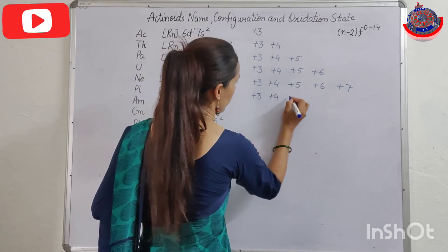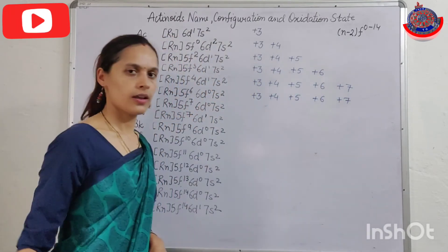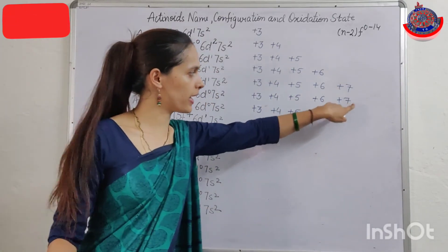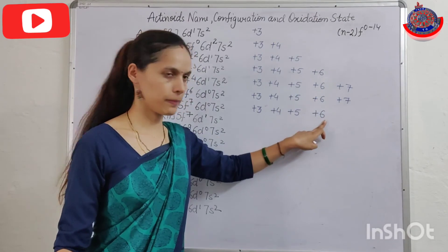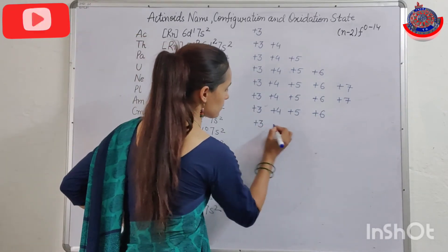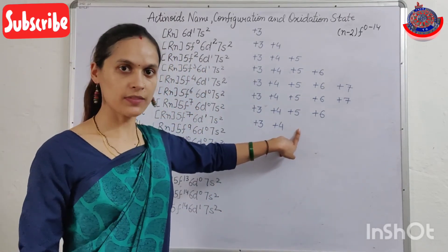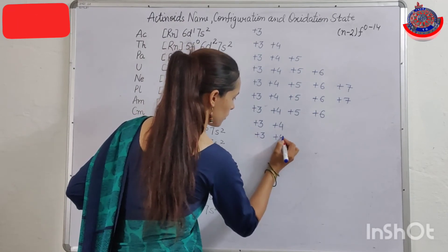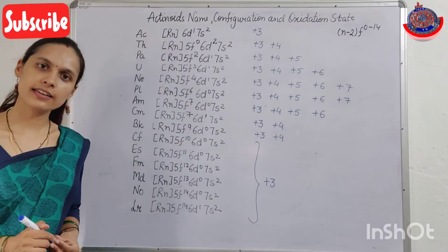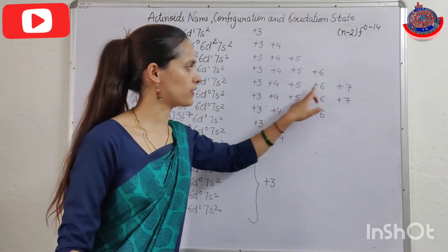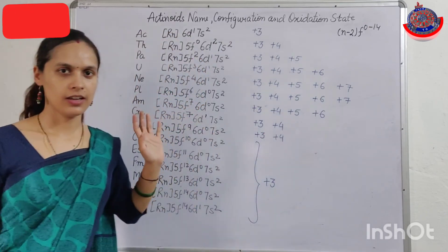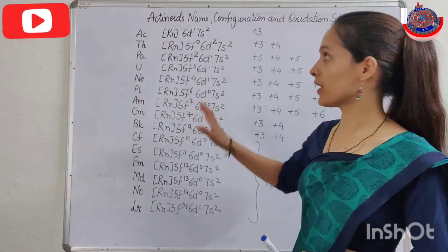Then repeat: +3 +4 +5 +6 +7, then +3 +4 +5 +6, then +3 +4 +5, then skip +5 and write +3 +4, skip again, +3 +4, then remaining +3 +4 +5 — skip +5, +3 +4, skip +5, +3 +4, +3. So: 3, 3-4, 3-4-5, 3-4-5-6, 3-4-5-6-7, 3-4-5-6-7, 3-4-5-6, 3-4-5-6, 3-4-5, 3-4, 3-4, 3-4-5, 3-4, 3-4, 3. In this way you can easily learn the oxidation states.